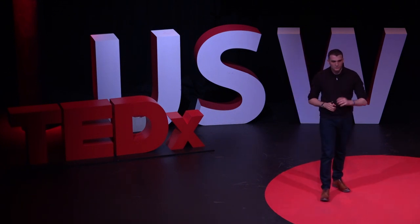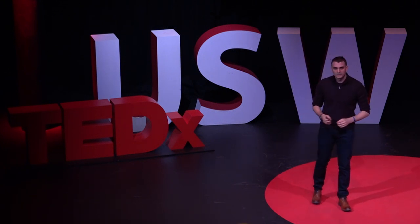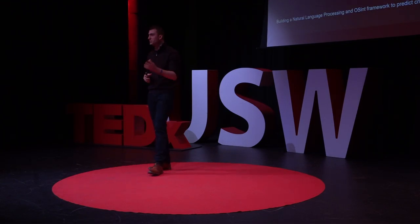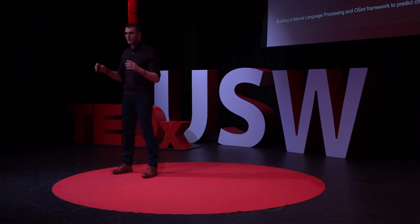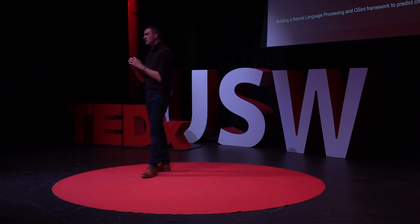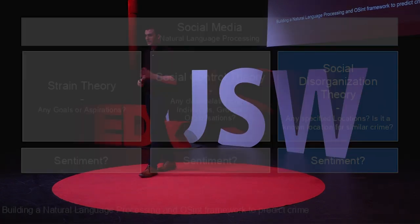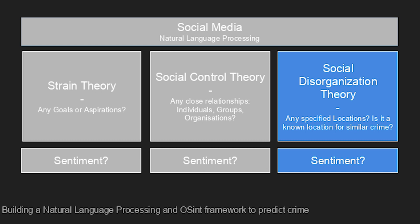We can go to websites like Twitter, Facebook, Instagram, and Tumblr, download information relating to specific users — tweets, posts, comments — and use natural language processing on that text. We then refer back to those predictive policing approaches mentioned earlier. First, we look at that text and ask: does it contain reference to any goals or aspirations? And if so, what is the sentiment?